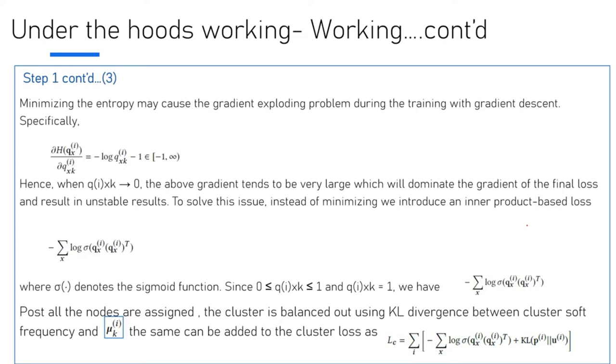Essentially, it gets to a point where Q_I(X_K) tends to be very large, which will dominate the gradient of the final loss and result in unstable results. One way to solve the problem is to introduce an inner product loss. Once you introduce inner product loss, you'll get an equation where sigma is a sigmoid function. This becomes the final equation for cluster assignment probability.